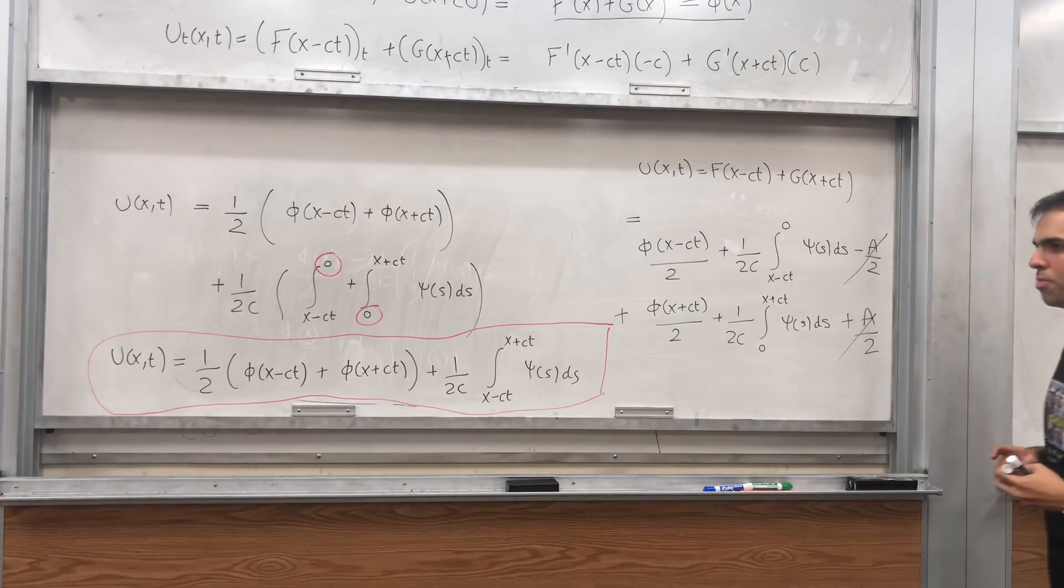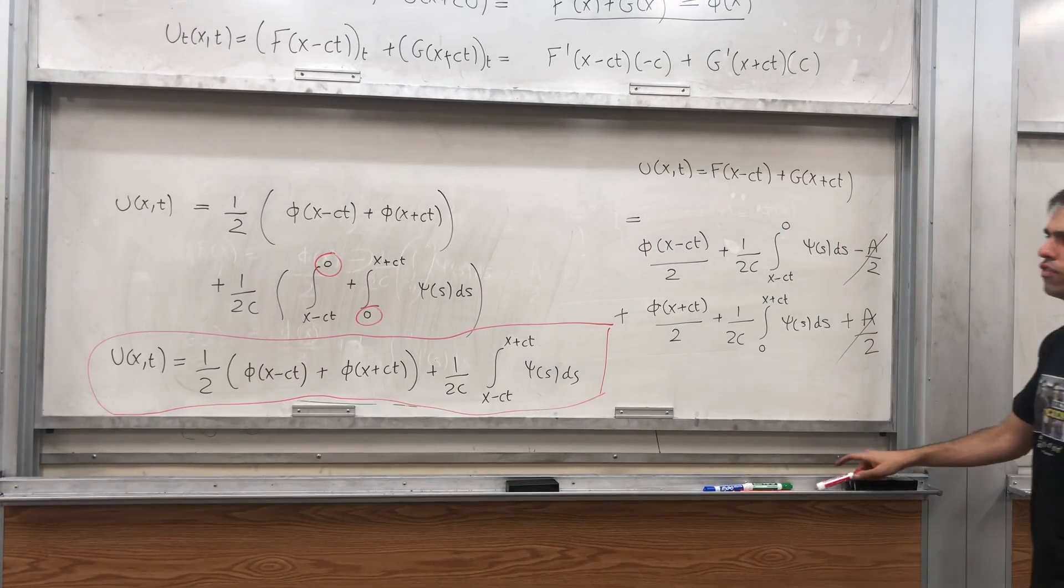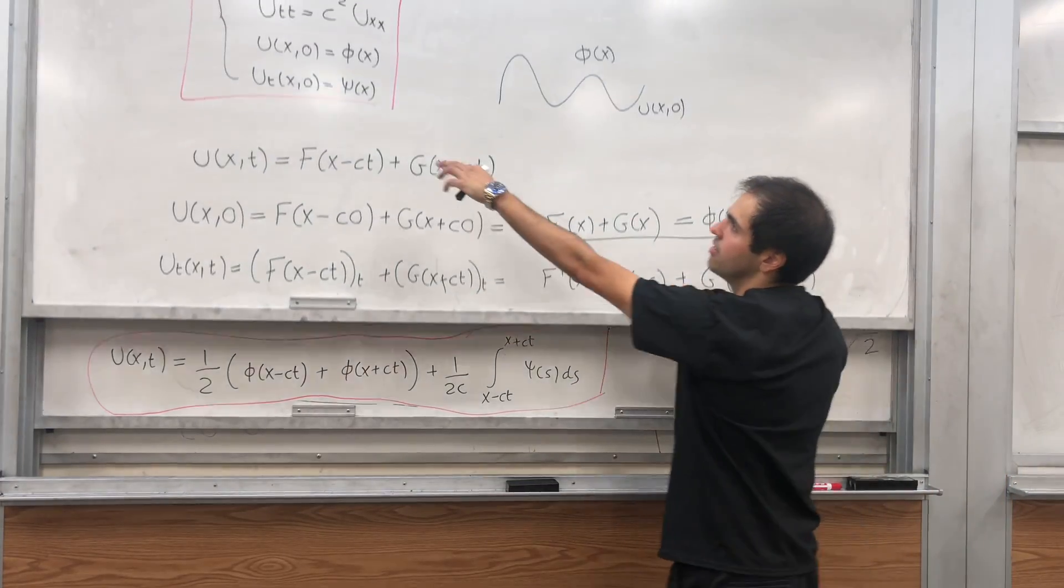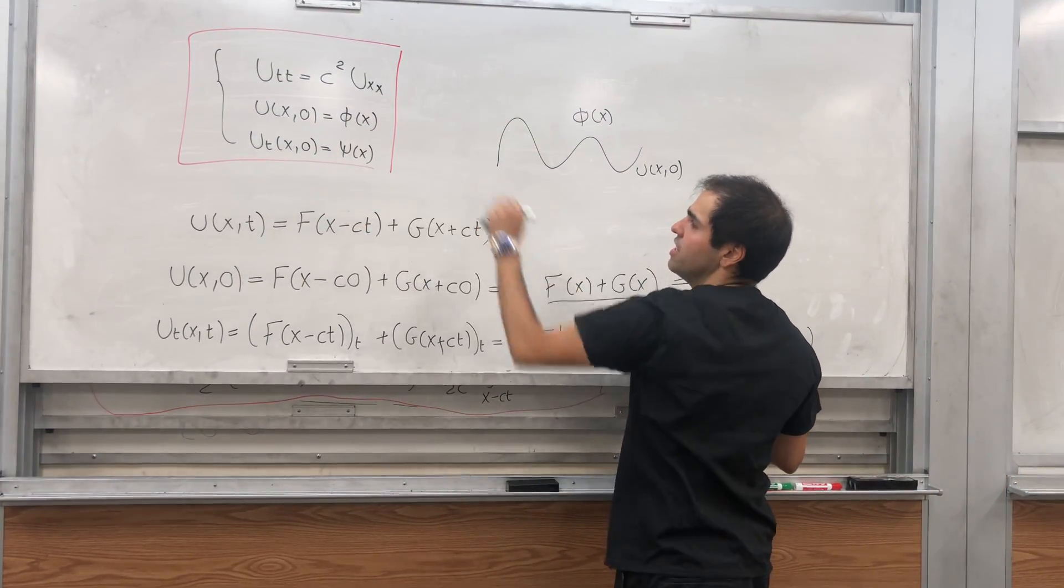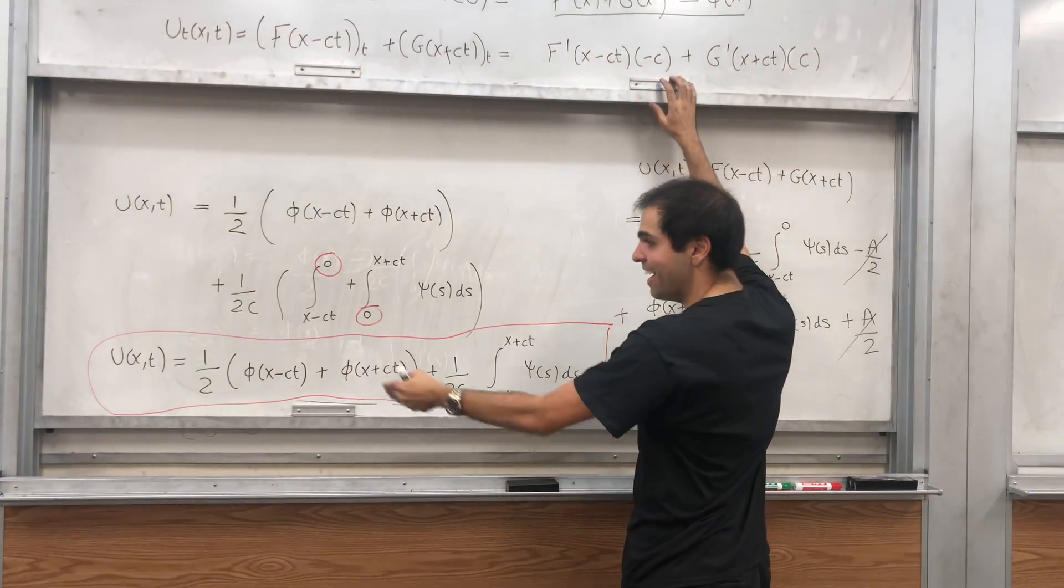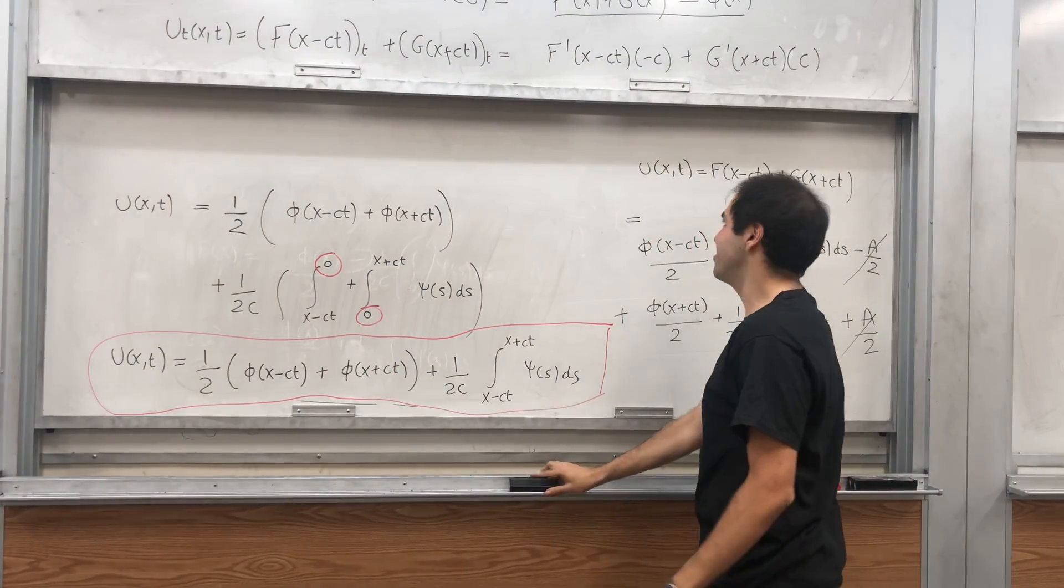Which gives you an explicit solution of the wave equation with initial condition. So phi, if the initial position is phi, and the initial velocity is psi, this gives us an explicit solution.